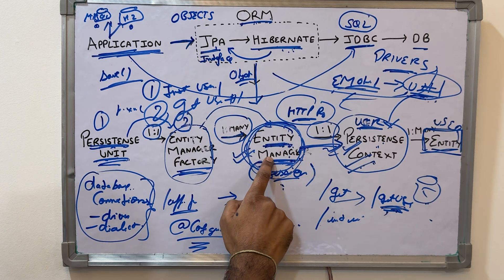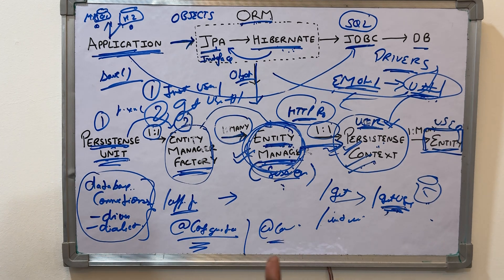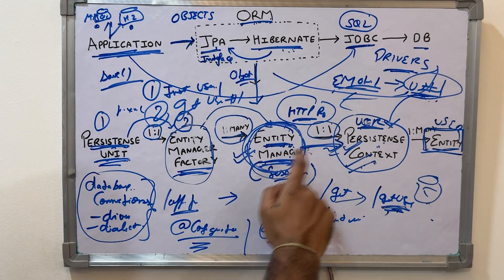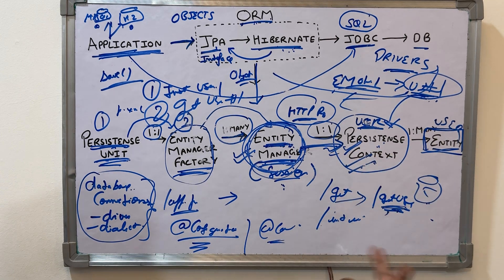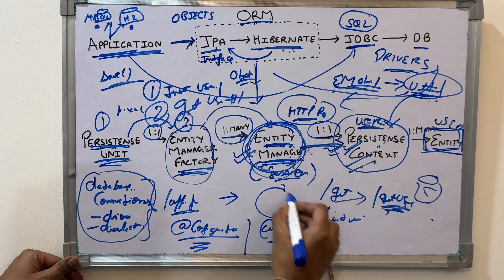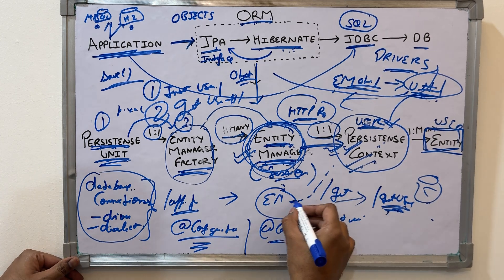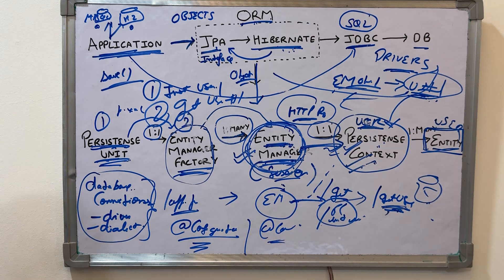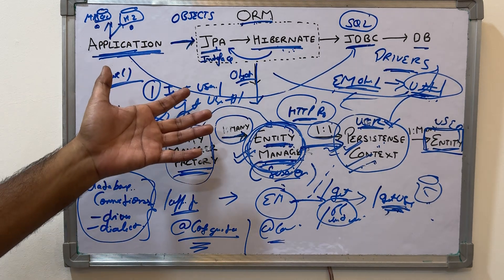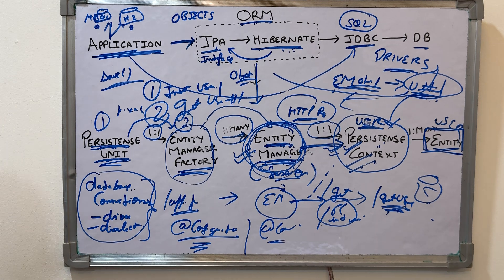The Persistence Context is tightly tied to the Entity Manager object, which is one per HTTP request. So within one HTTP request, if you insert and then get using the same Entity Manager, the second call may hit the cache. But if you have a different Entity Manager object, it has its own Persistence Context and will result in a DB hit since they do not share a Persistence Context. That's a high-level overview of JPA and its architecture — I've covered it in depth with coding and a demo as well. Thanks, bye!